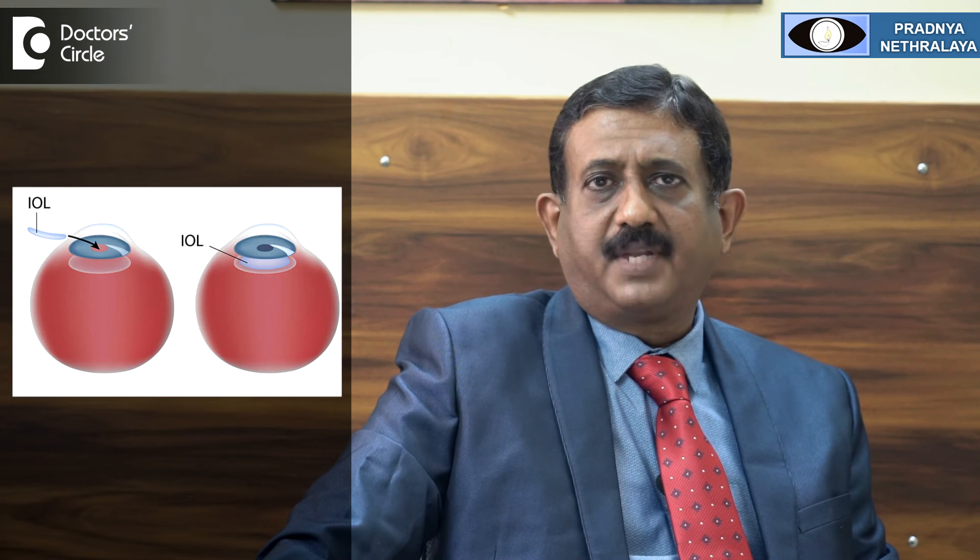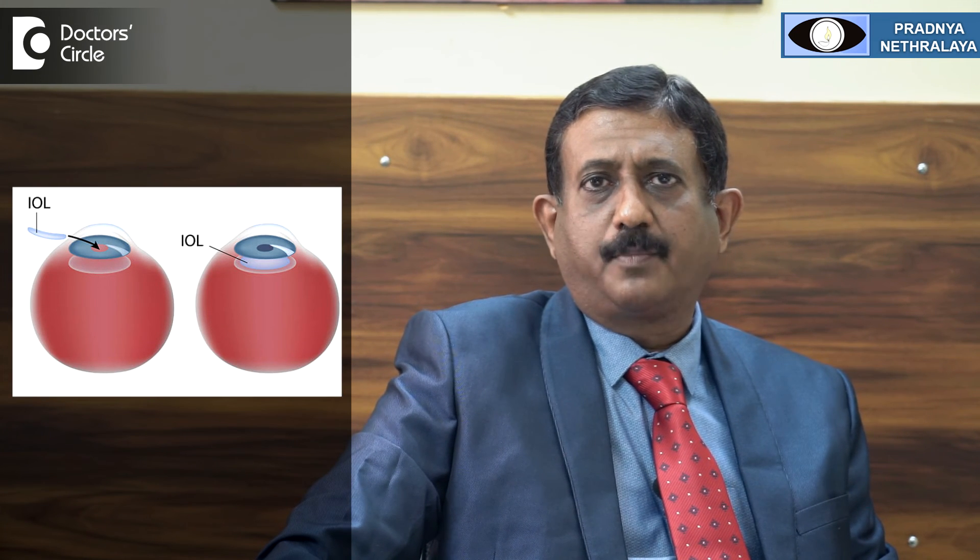Otherwise, a YAG capsulotomy is a very safe procedure. It is done as an outpatient procedure using only eye drops. The patient sits in front of the slit lamp, a small lens is placed in front of the eye so that the person doesn't move the eye, and a few laser shots are used to clear the posterior capsule. Post-surgery, the person is given some steroid eye drops for 4-5 days. Most patients require this at least once in their lifetime, and this procedure need not be repeated again.